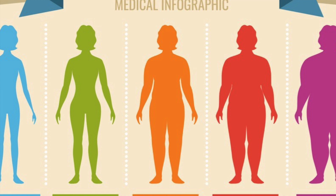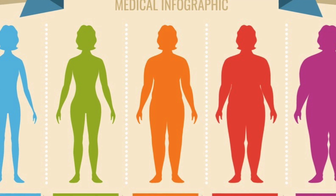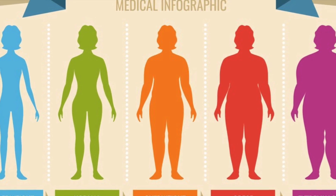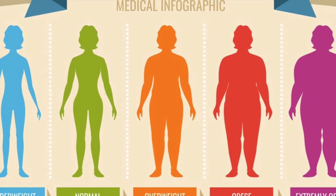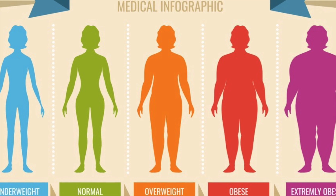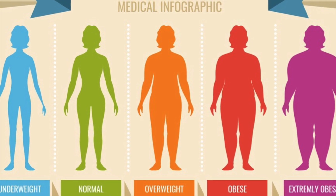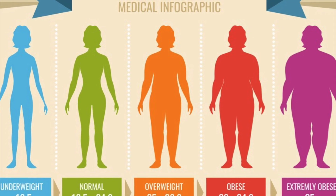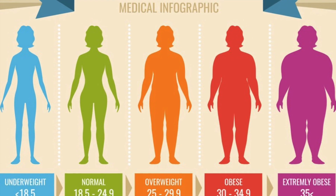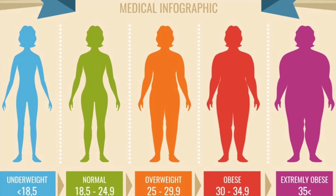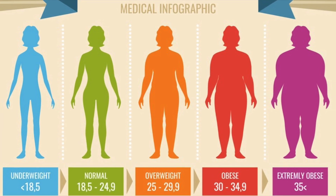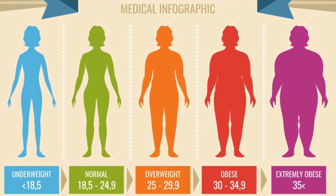A BMI of 18.5 and below is considered underweight. 18.5 to 24.9 is normal weight. 25 to 29.9 is overweight, and anyone with a BMI of 30 or more is considered obese.